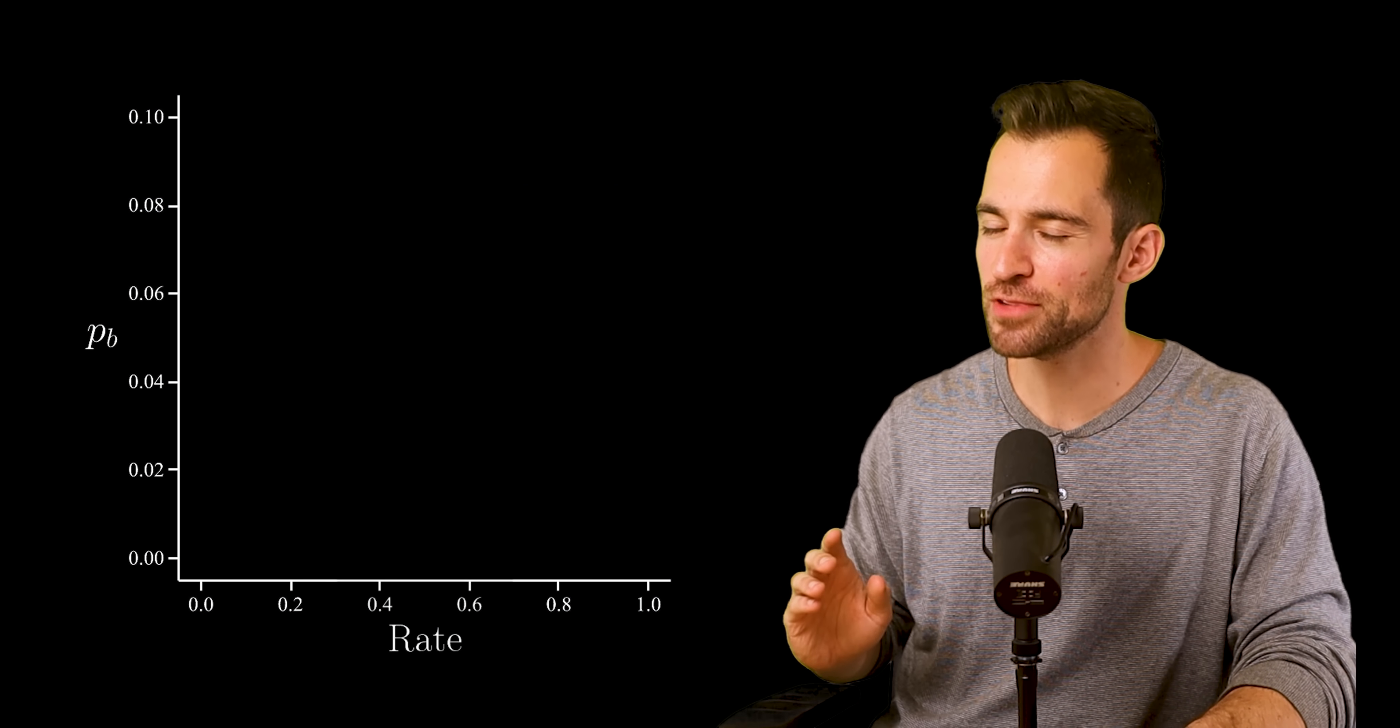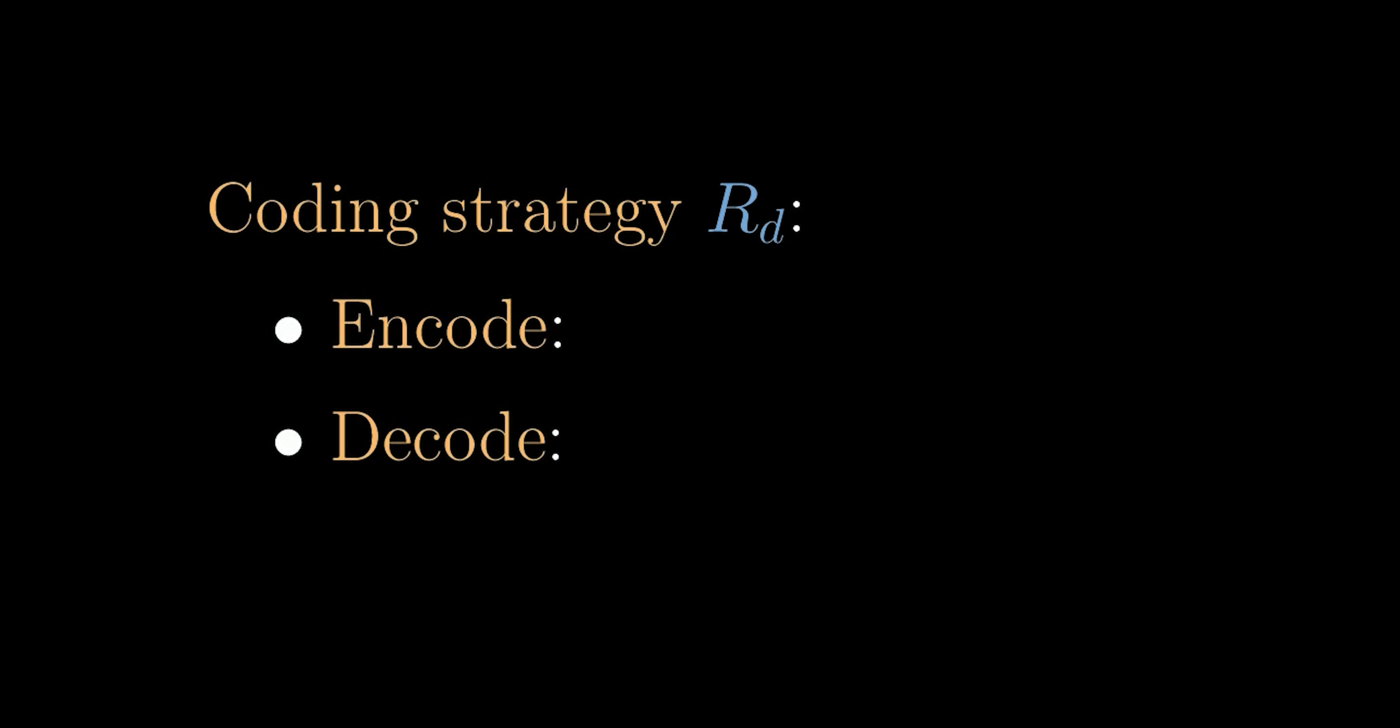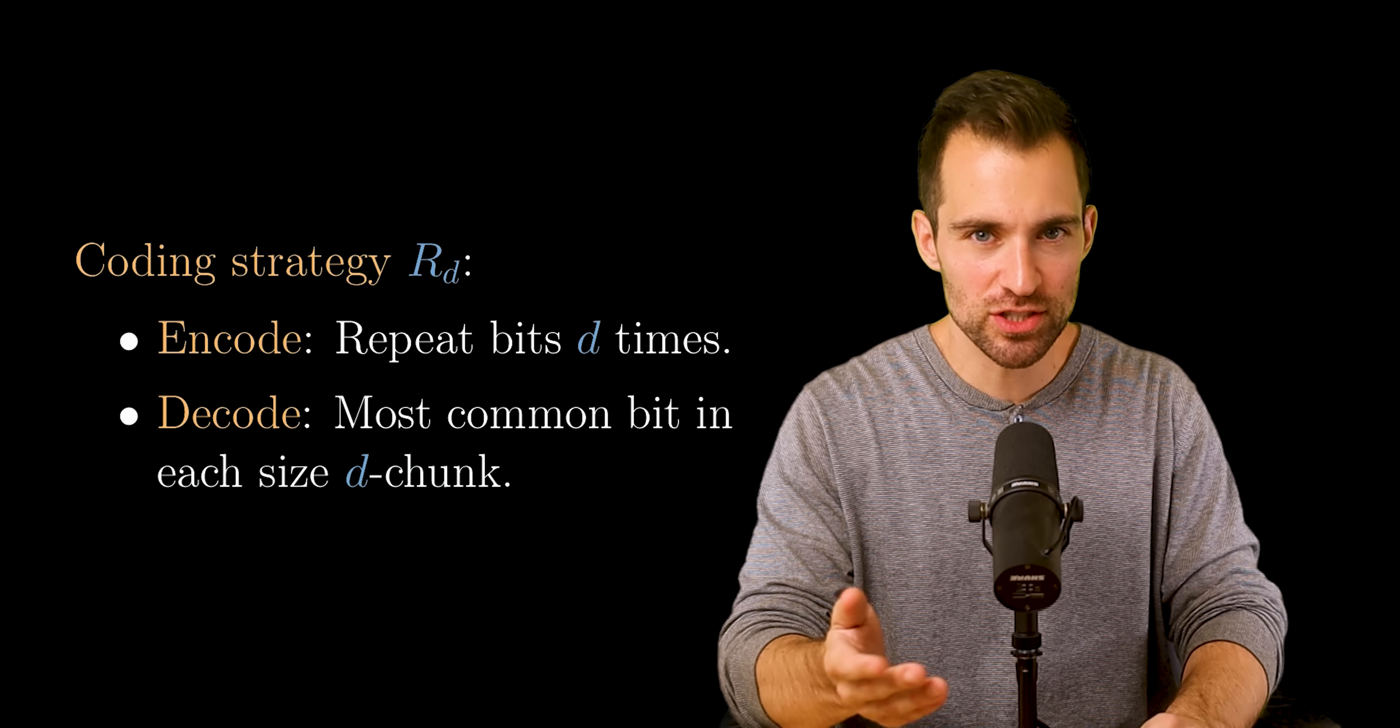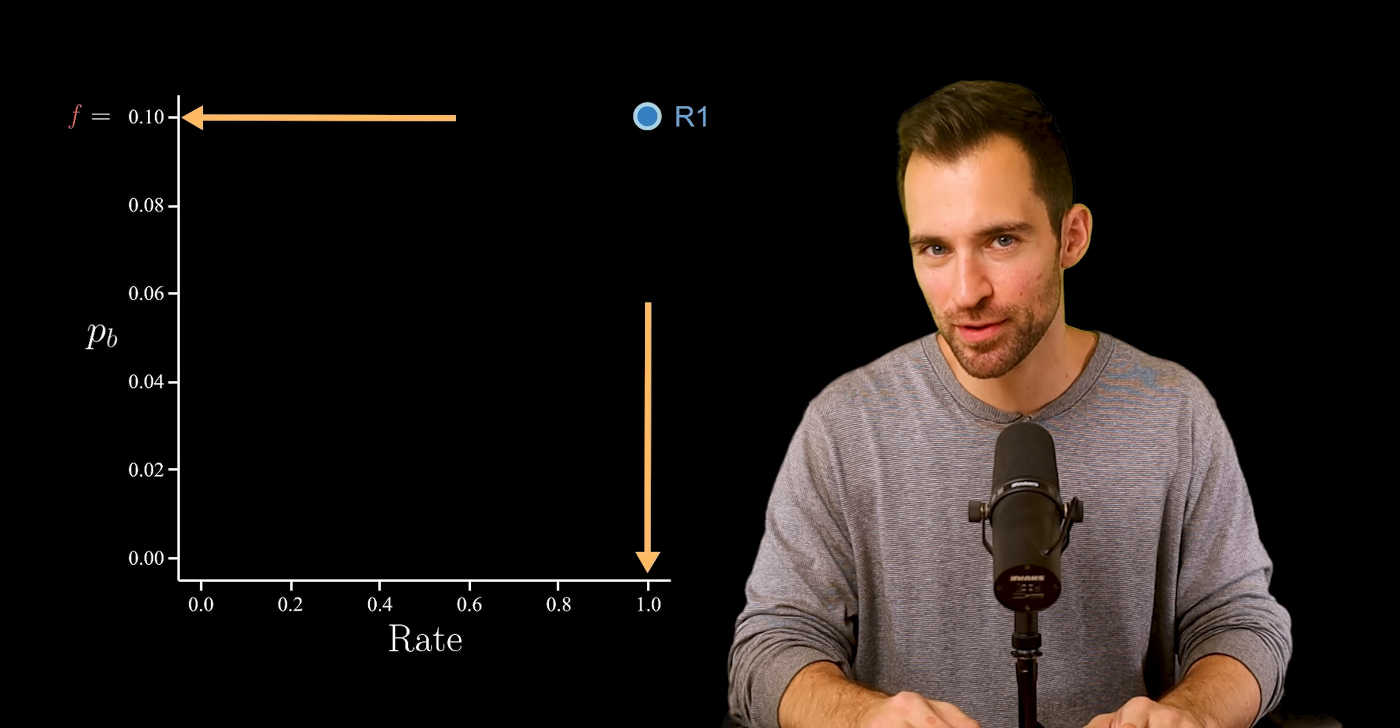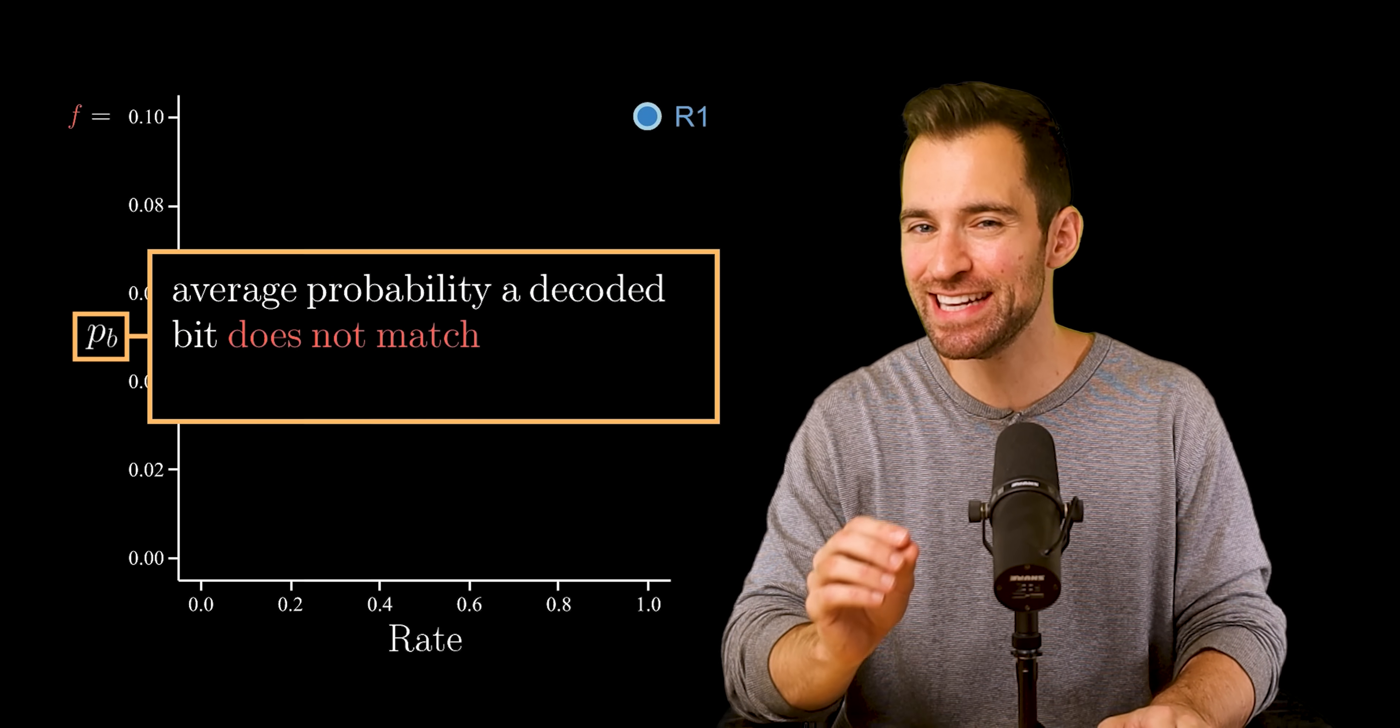So let's imagine two dimensions. Along the horizontal axis is the rate, measuring the speed of the message. And along the vertical is the probability of a bit error. I'll define these terms exactly in a second. But first, let's label the coding strategies. We say rd is the coding strategy where we repeat each bit d times, and the receiver reads the most common bit in each size d chunk. Earlier we saw r3 and talked about the slower but safer r10. Also r1 is the no coding strategy. That's where you just send the message straight through. Now we can place these. R1 goes here. It has a rate of 1 and a bit error probability of 0.1, which is the channel's flip probability. For this to make sense, we need to define the axes.